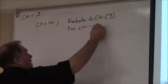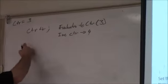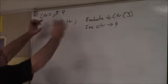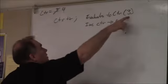So CTR will become four. So after this line of code executes, CTR becomes four. But in the line of code where it's used, it will evaluate to three.